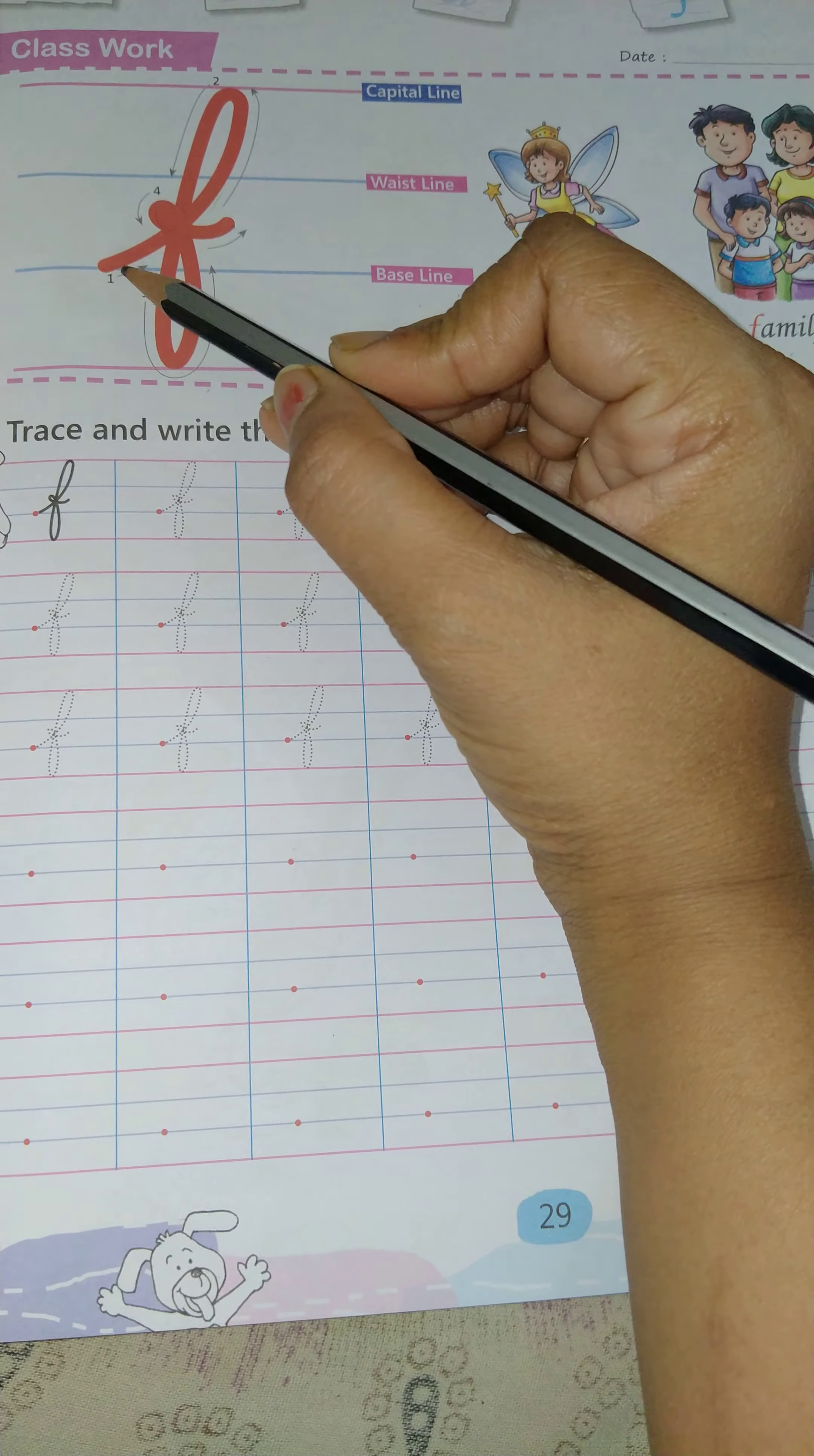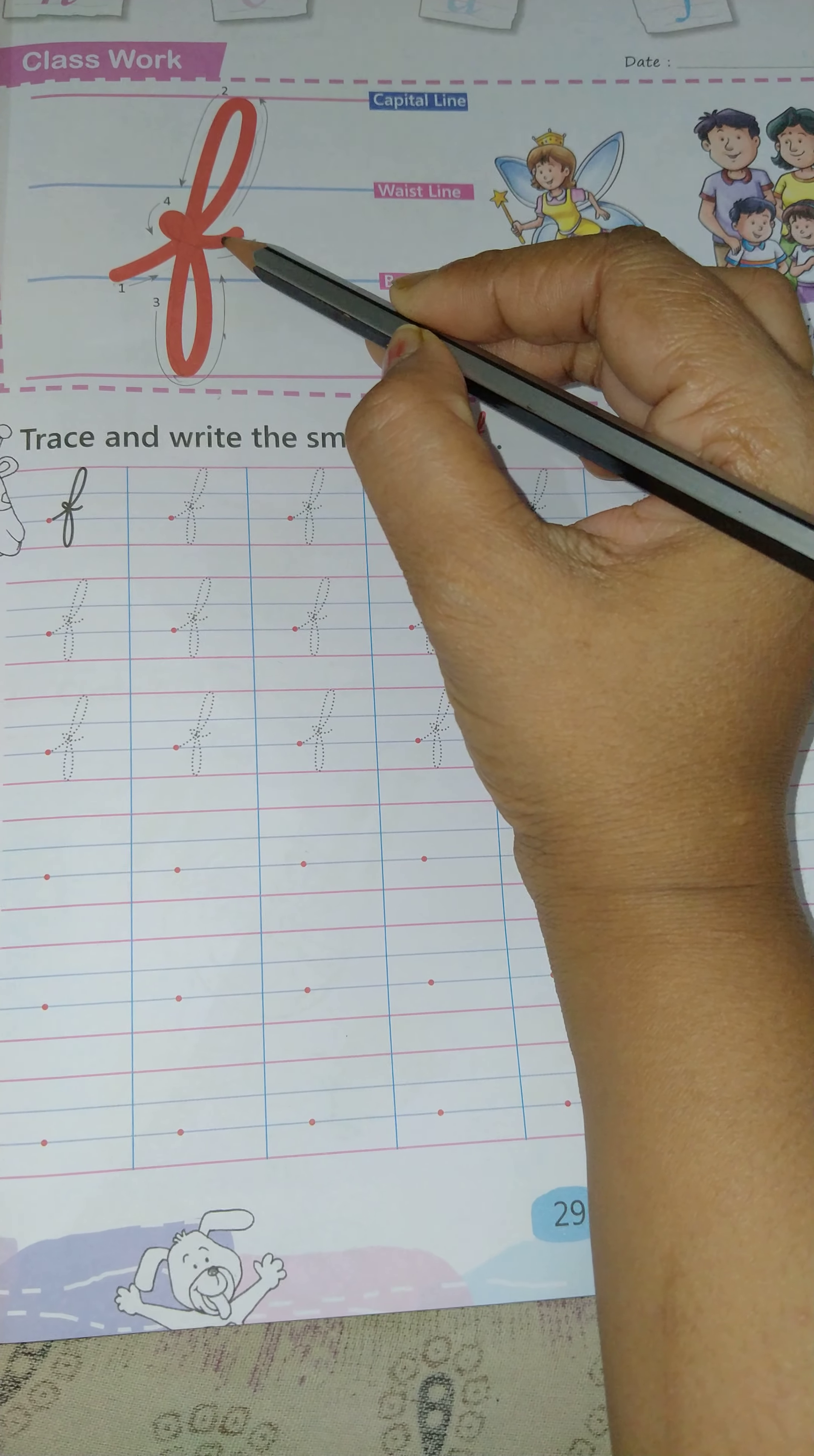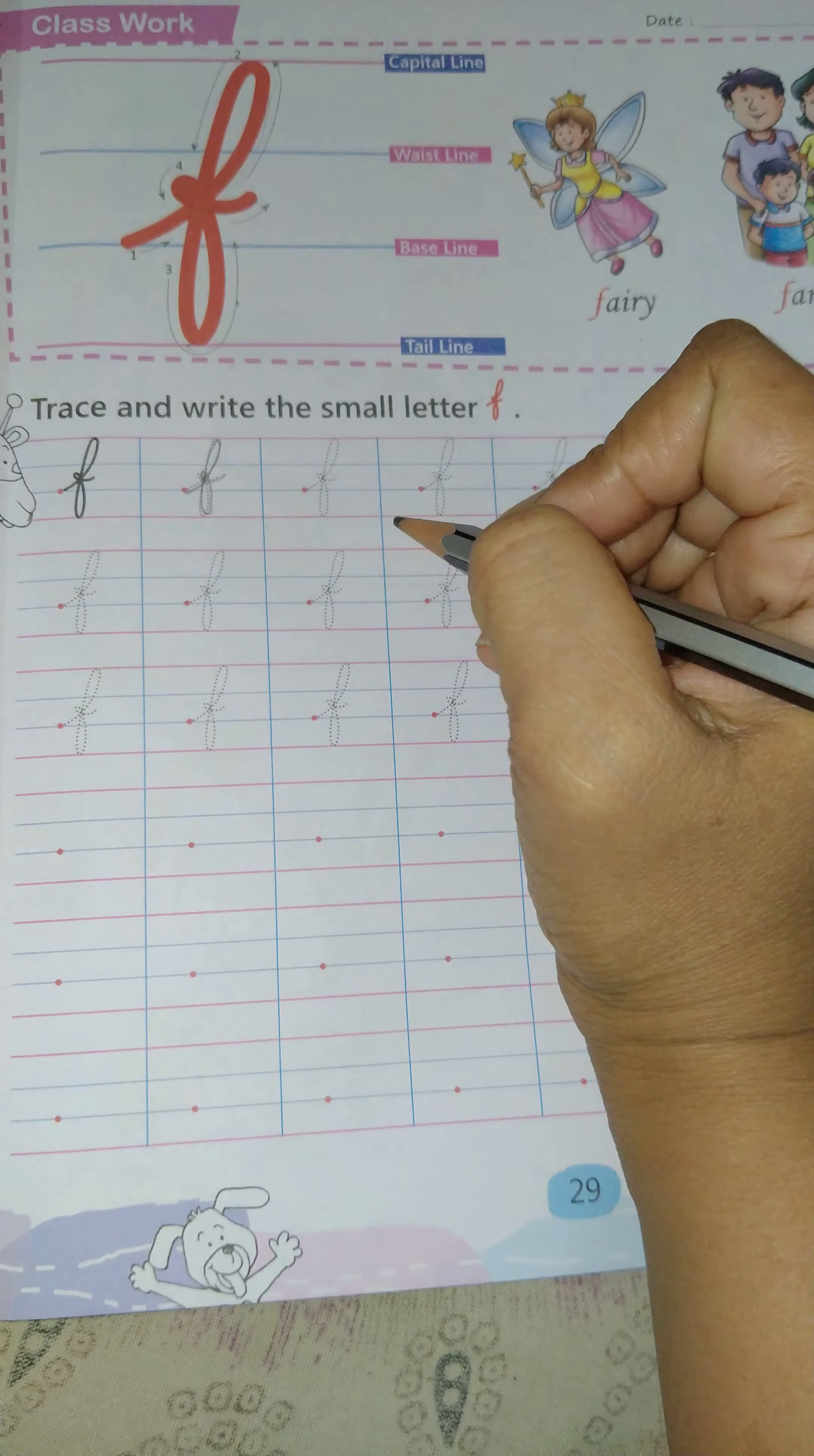One more time I will show you. From the baseline you have to start, like this. Capital line, touch. Then you have to touch tail line. Curve. Exactly.